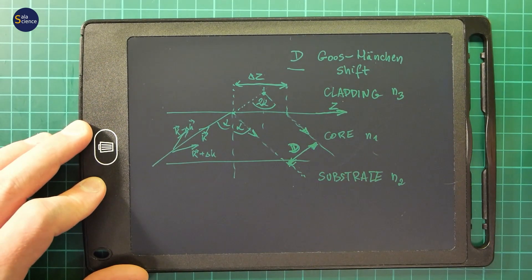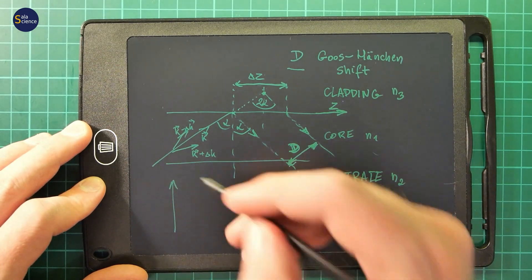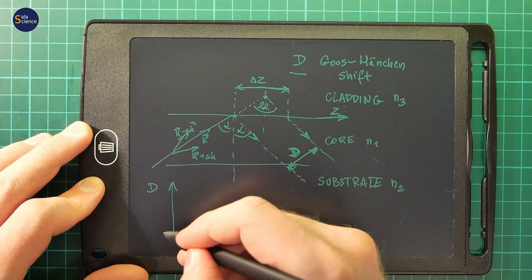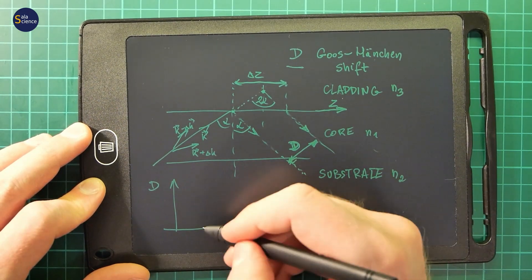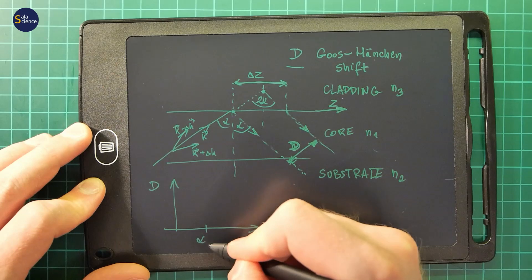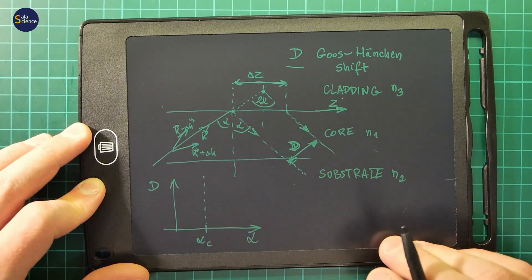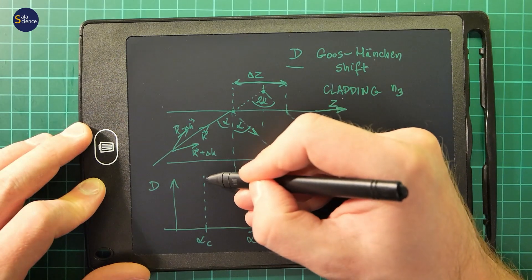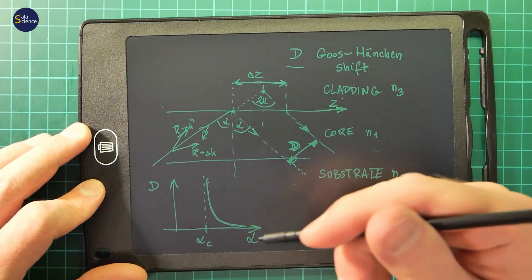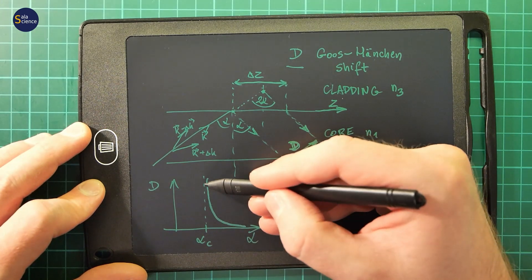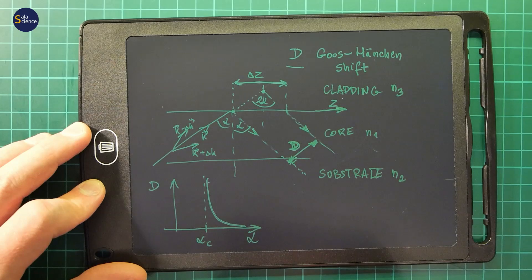If we calculate this shift and draw this D versus the angle of incidence, then here we will have some critical angle. And there is an asymptote, and it will look like this.